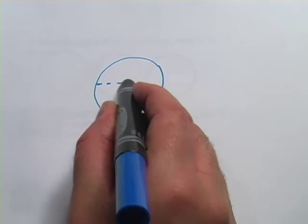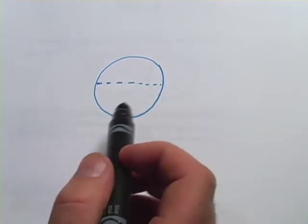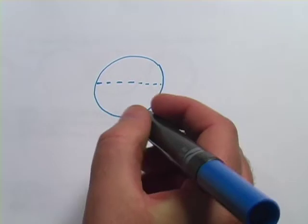And the first measurement you should know is the distance across the circle at the widest point, right through the middle, and that is called the diameter.